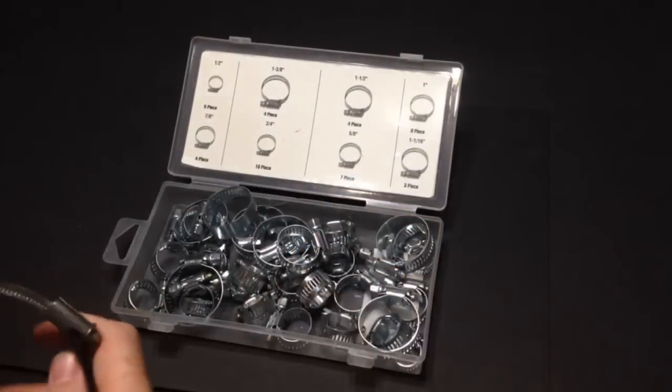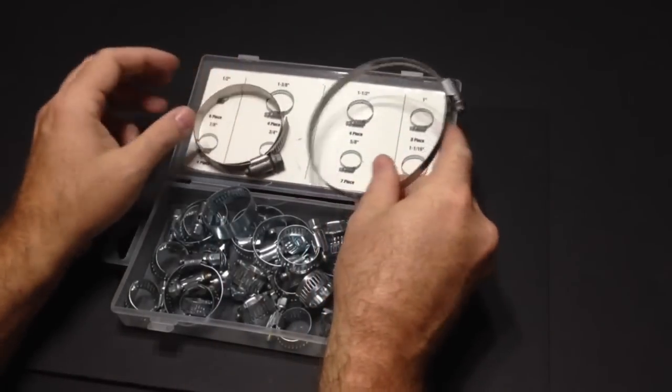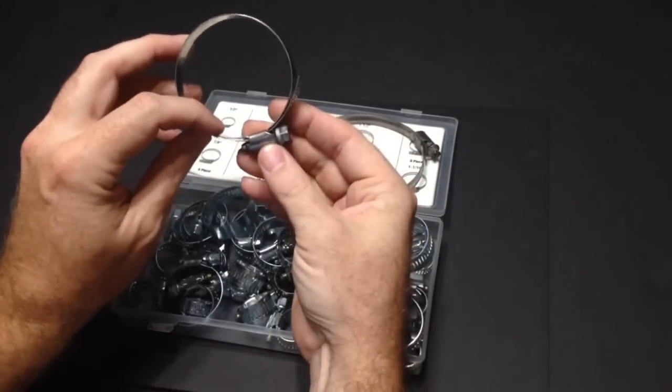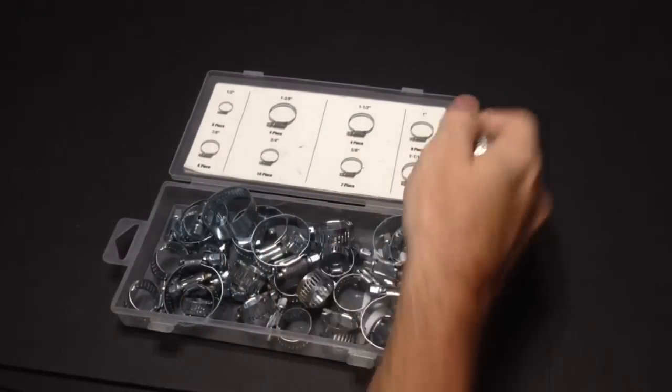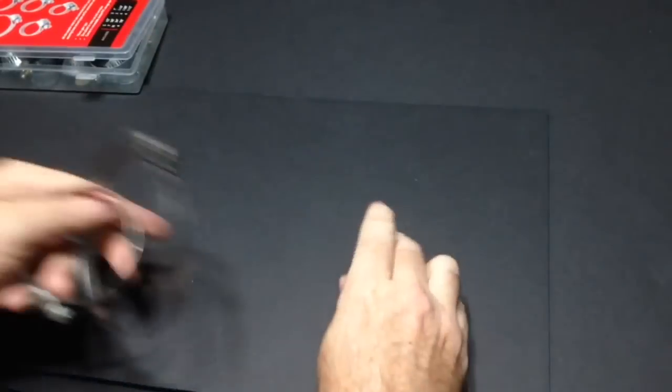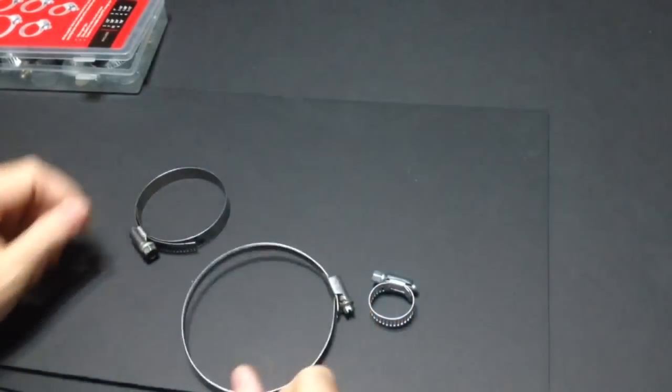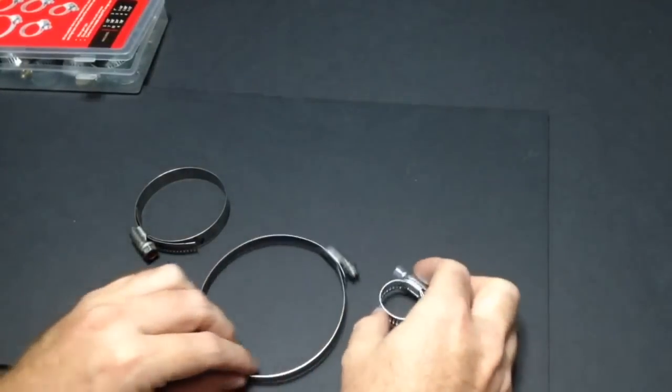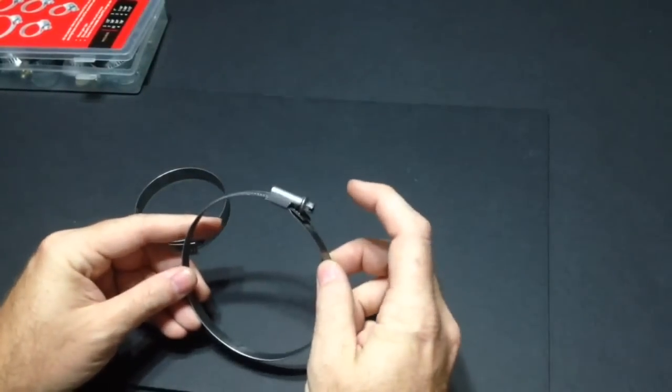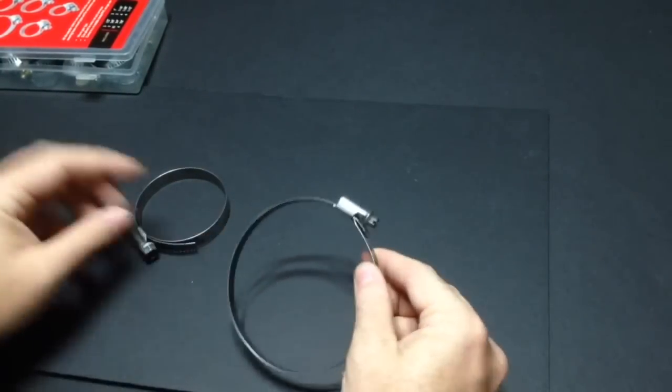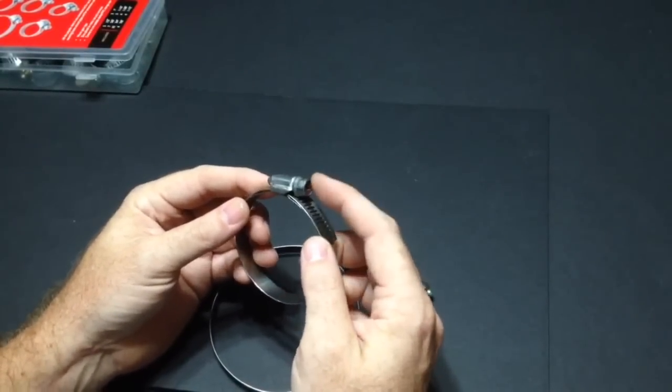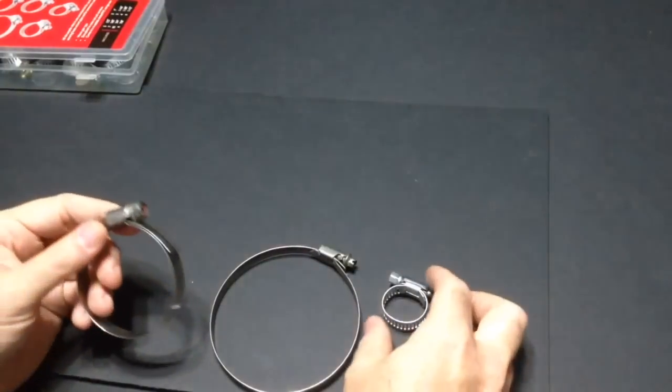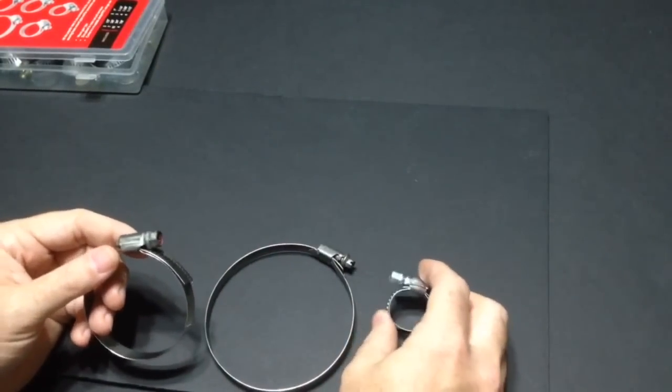I have a BMW OEM clamp and a Toyota one. Obviously Toyota and Honda pretty much look the same. The BMW clamps have a little smaller head to them. The Toyota ones almost always have a 10 millimeter head if they're the bigger ones, or an 8 millimeter head.